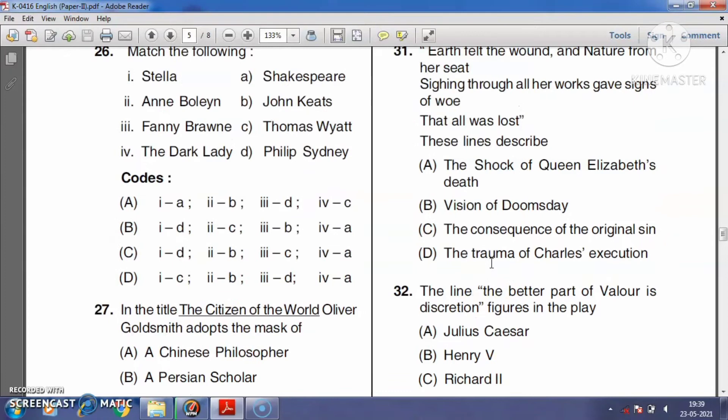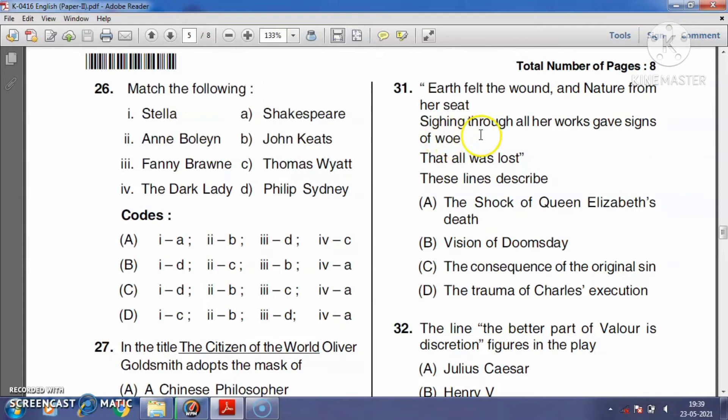Question number thirty-one: 'Earth felt the wound, and Nature from her seat, sighing through all her works, gave signs of woe that all was lost.' These lines describe the shock of Queen Elizabeth's death, a vision of doomsday, the consequences of the original sin, or the trauma of a child's execution? The right answer is option C, the consequences of original sin.